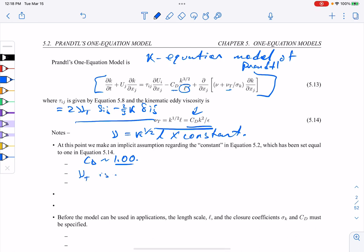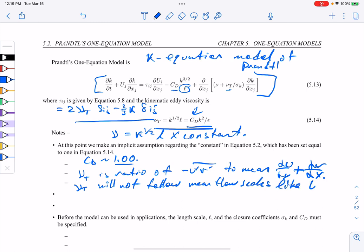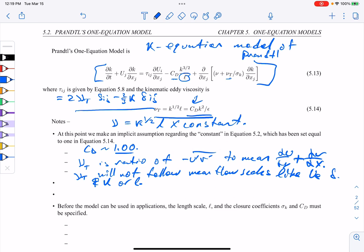Here, nu T is ratio of negative u prime v prime bar, for example, to mean partial u partial y plus partial v partial x. And it turns out that this quantity, nu T, will not follow mean flow scales like the edge boundary layer or boundary layer thickness and k or L, turbulent kinetic energy or length scale. So these are assumptions that we're seeing being violated today by this model. And maybe they're not the best ones.